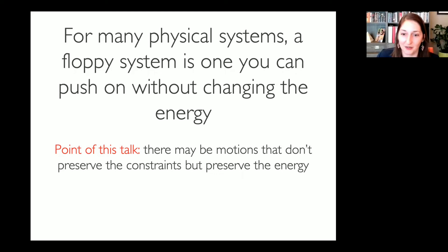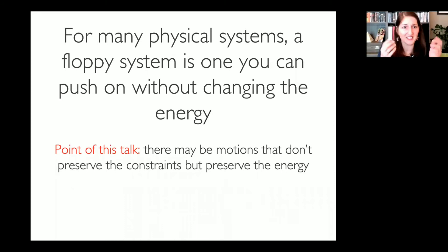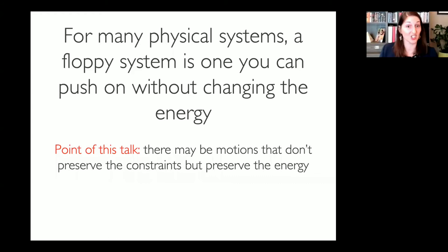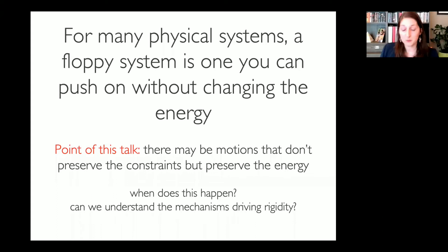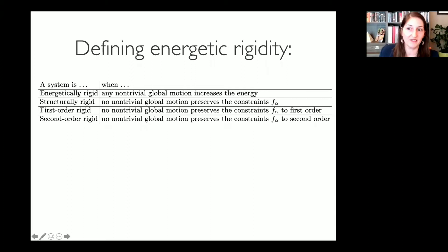We define energetic rigidity. The question we're really asking is: can we show when first-order rigidity implies energetic rigidity, or when second-order rigidity does? We assume the physical system's initial condition is a local minimum of the energy — not generically assumed in tensegrity structures. That allows us to look at perturbations around the local energy minimum, perturb the system, and ask how the energy changes. Our condition for floppiness is that the energy doesn't change to first or second order.